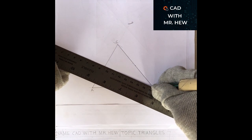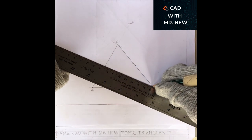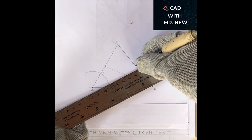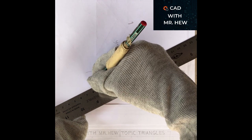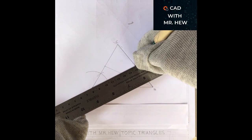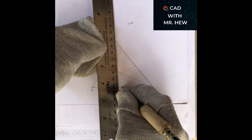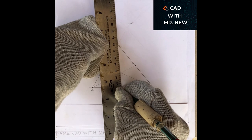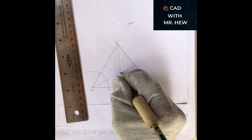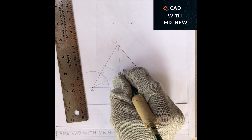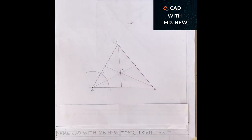We're going to connect B to the midpoint marked on line AC. Then we're going to connect A to the midpoint on line BC. Then we're going to connect C to the midpoint of line AB. Where the three medians intersect, that is the centroid for the given triangle.